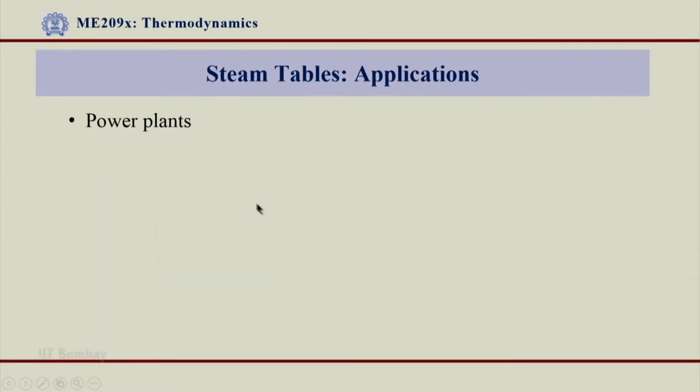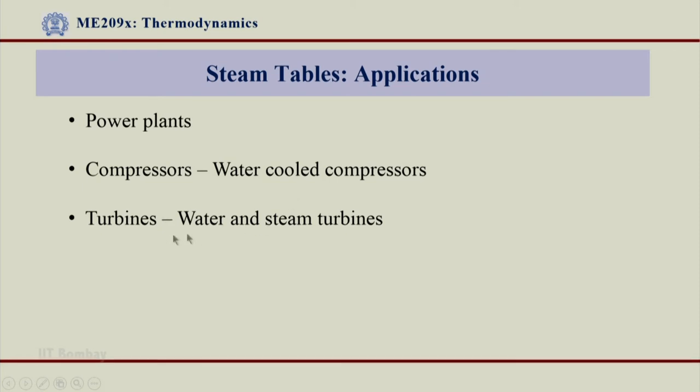Here our applications are with respect to power plant of which I have just talked about. Compressors where water cooling is used for compressor, chilled water is used for cooling to take away the heat of compression, very important application for water. Then we have got turbine where water turbine could be used for power production or steam turbine where again the phase changes are involved from steam to water, the condenser, there are heat exchangers that are involved in these cases.